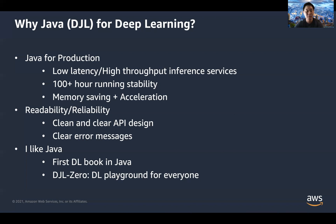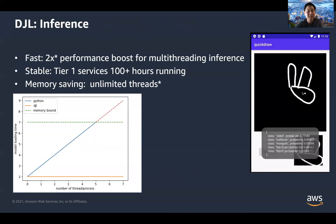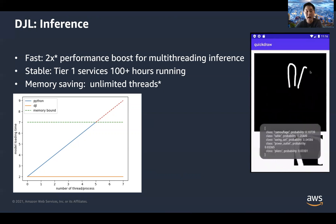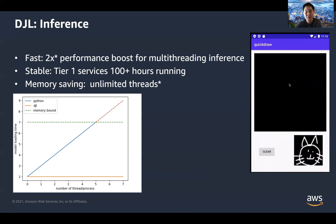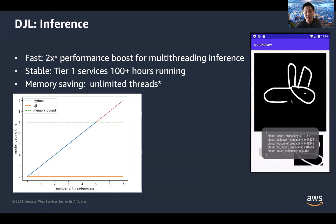At any time you'd like to configure something at an advanced level, you can switch from the Zero package to our main package to do all your training and inference tasks. Now let's look at inference. There's a very interesting use case on the right-hand side: a simple Android application that can recognize doodles that people draw. I drew a rabbit, and it was recognized seamlessly directly on the Android device.